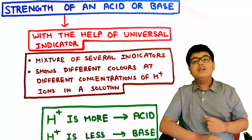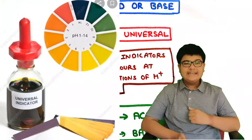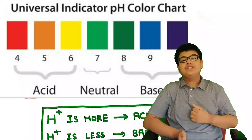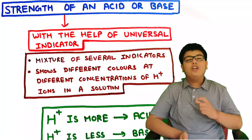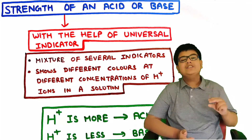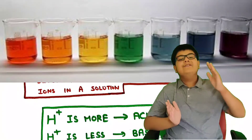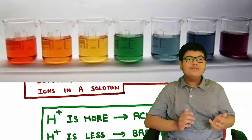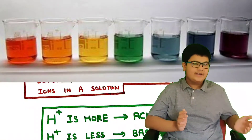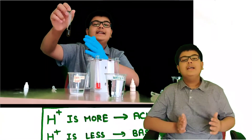For this we use a universal indicator. Universal indicator is a mixture of several indicators and it shows different colors at different concentrations of H+ ions in a solution. If the concentration of H+ ions is less — meaning the solution is a base — the universal indicator will show a different color. And if the concentration of H+ ions is more — meaning the solution is acidic — it will show a different color. We will understand this color change with the help of an experiment later in the video.